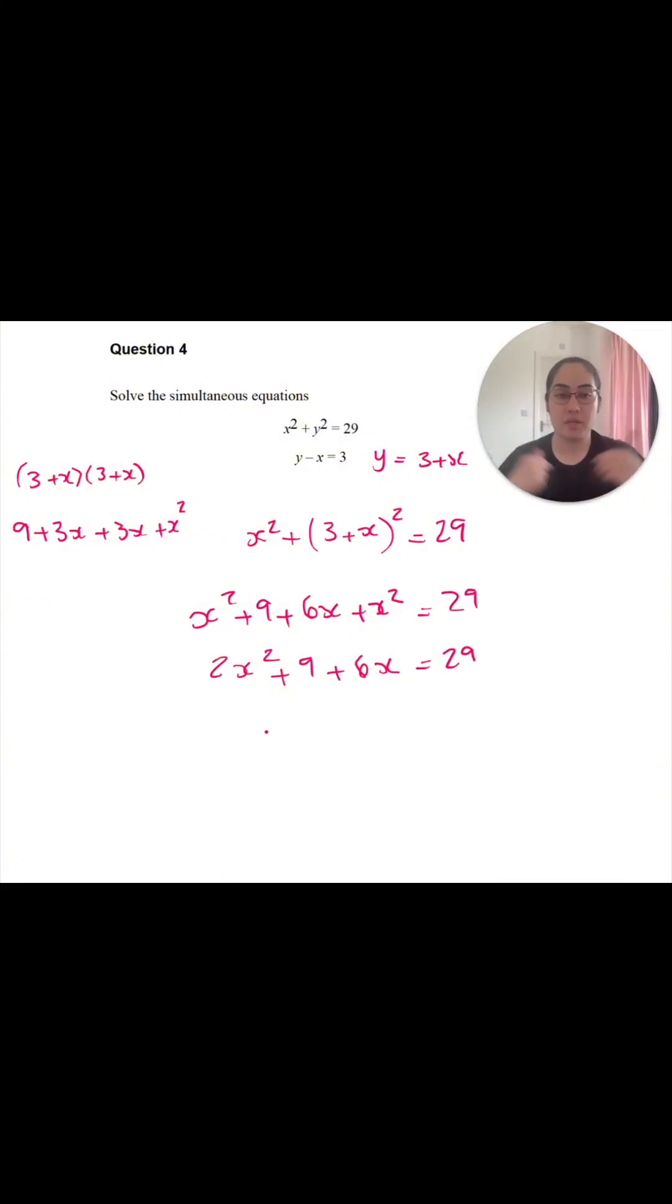In order for me to solve this, I have a quadratic equation. In order for me to solve it, I need the equation to equal 0. So I'm going to subtract 29 from both sides. So I have 2x squared plus 6x minus 20 is equal to 0. 9 minus 29 is equal to minus 20.